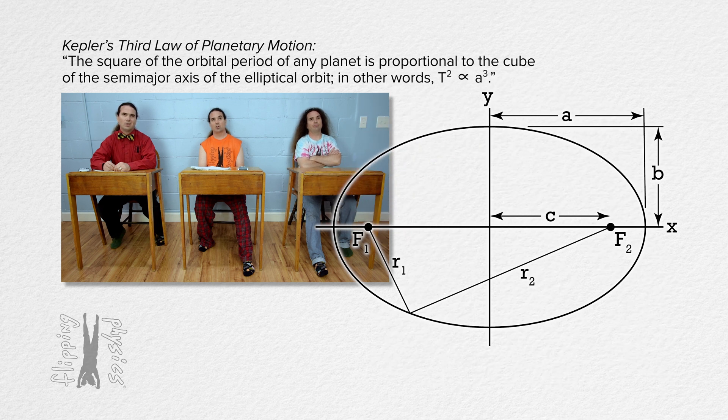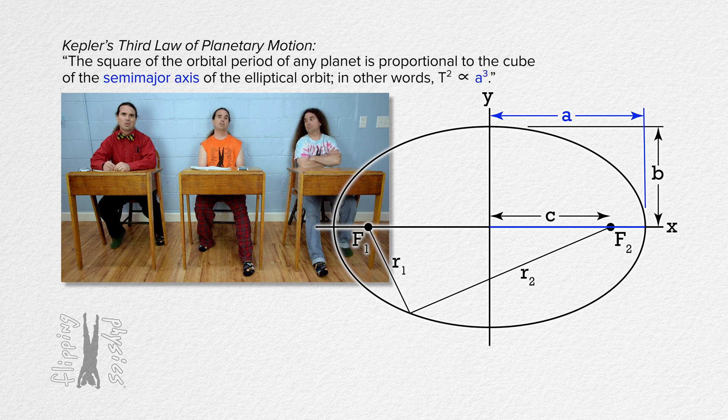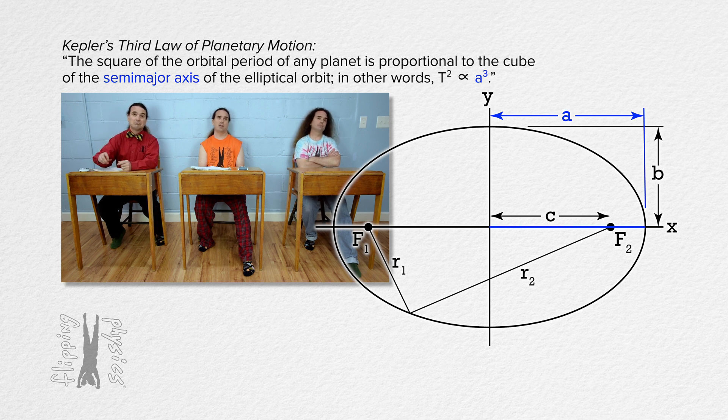The square of the orbital period of any planet is proportional to the cube of the semi-major axis of the elliptical orbit. In other words, capital T squared, or period squared, is proportional to the cube of the semi-major axis, or a cubed. Thank you again, Bobby.